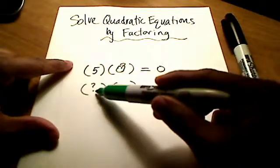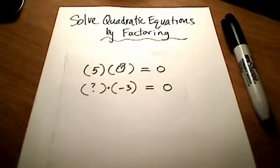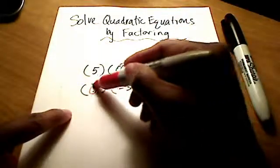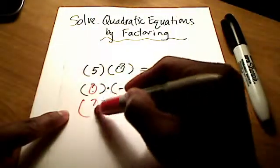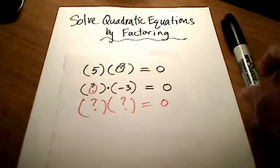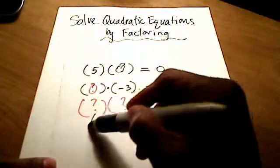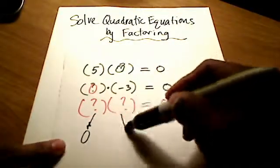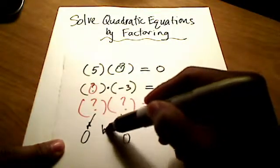Or if I did some number times negative 3 is equal to 0, then I'm pretty sure you can figure that out and say, well, that missing number has to be 0. What if I said I've got two numbers, I'm not telling you what either one is, and their product is 0? You can probably safely assume that either this first number has to be 0, or that second number has to be 0, or maybe both of them are 0.